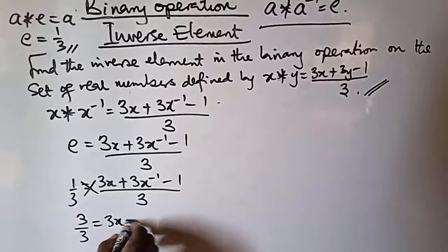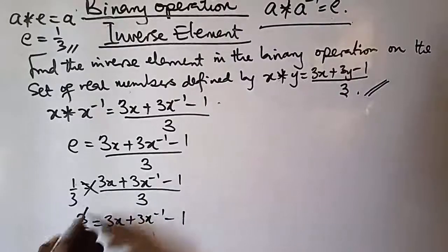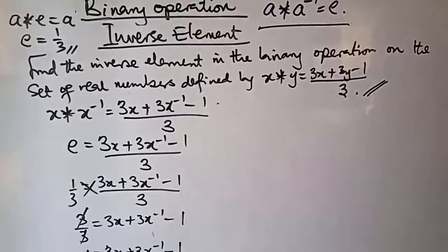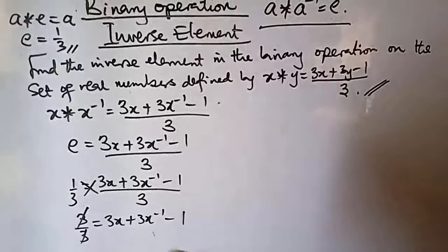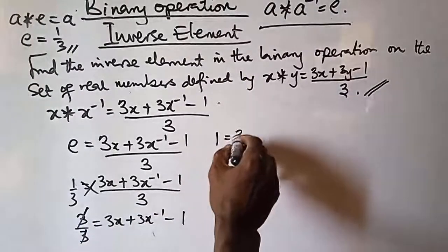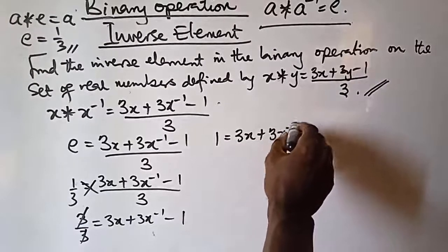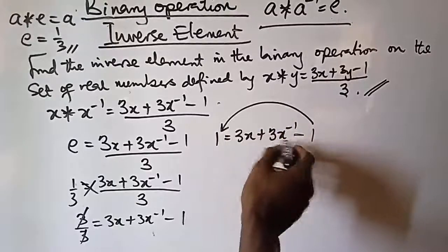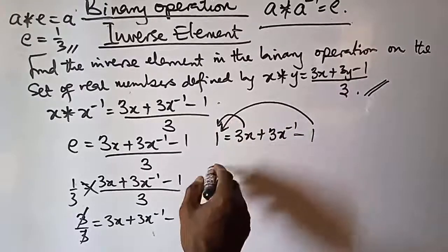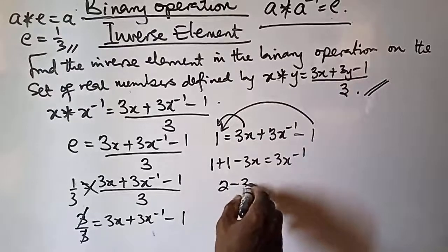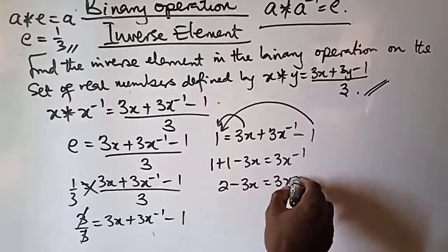Cancelling the threes we are left with 1 equals 3x plus 3(x inverse) minus 1. Collecting like terms — bringing 1 to the left and 3x to the right: 1 plus 1 minus 3x equals 3(x inverse), which gives 2 minus 3x equals 3(x inverse).